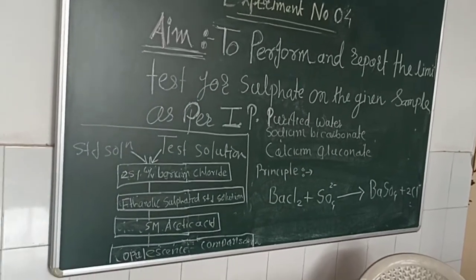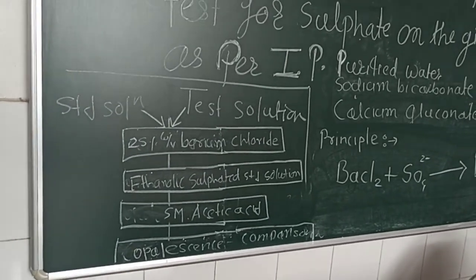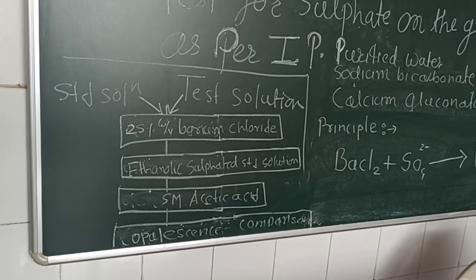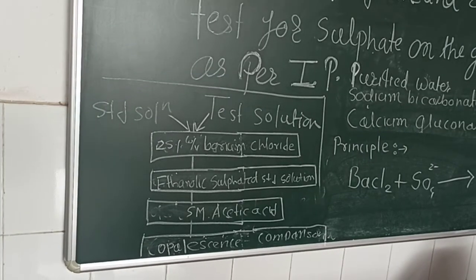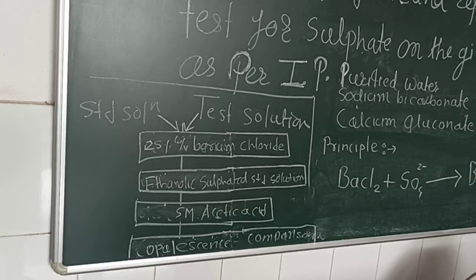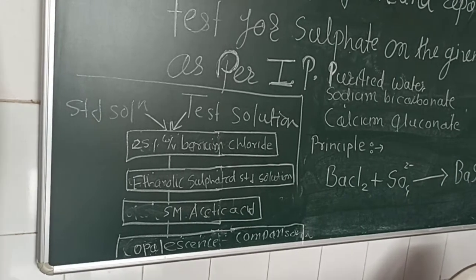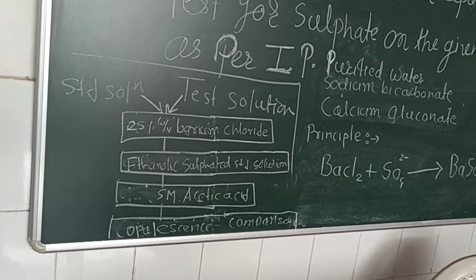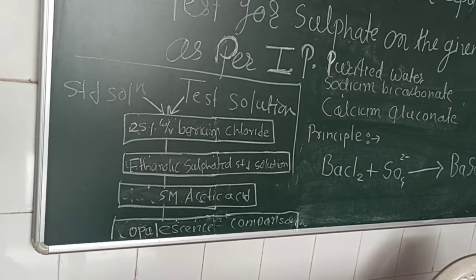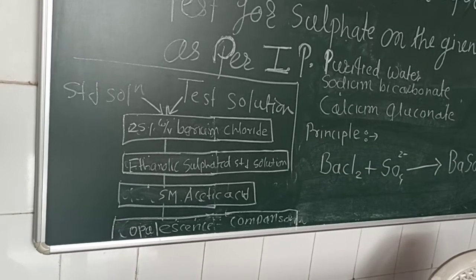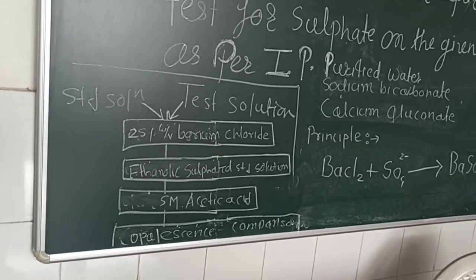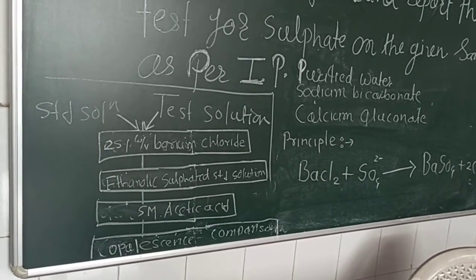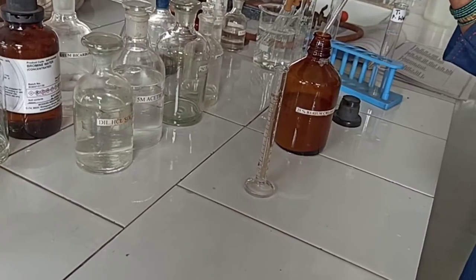In this experiment we prepare a standard solution and three test solutions. To all solutions we add 25% weight by volume barium chloride, ethanolic sulfate standard solution, and 5 molar acetic acid, then observe the opalescence. We compare the opalescence of each test solution with the standard to determine whether sulfate is within or outside the permitted limit.